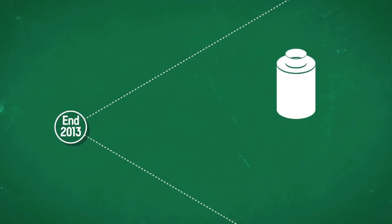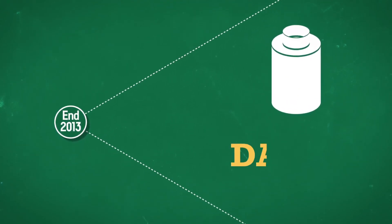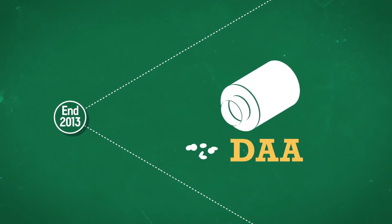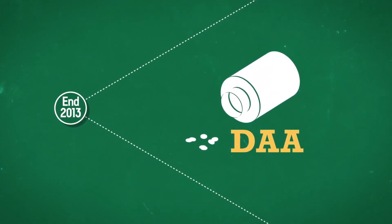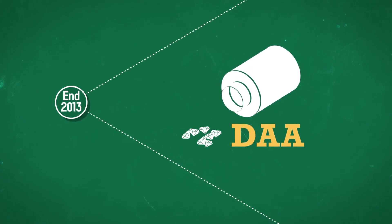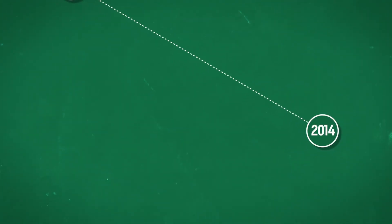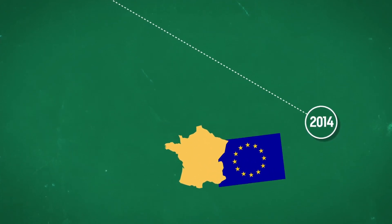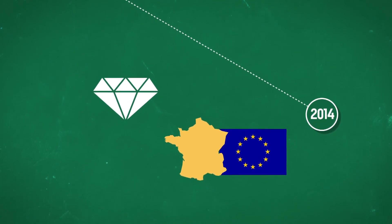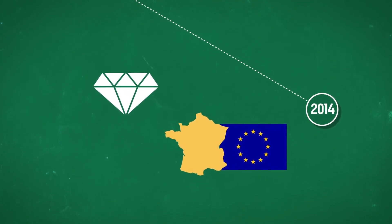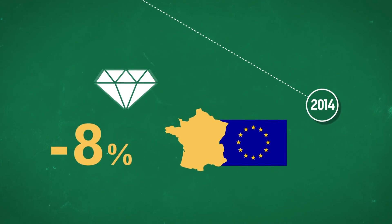The development at the end of 2013 of a new generation of treatments called DAA, for direct acting antivirals, was a minor revolution, but a revolution with an exorbitant price tag. In June 2014, France and 14 other European countries launched a campaign calling on a private laboratory to reduce their price. France was accorded a small discount of around 8%.